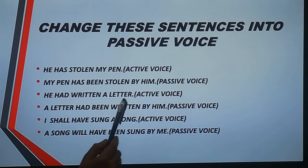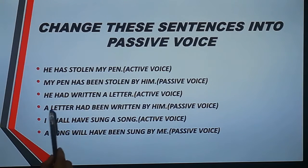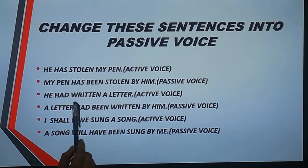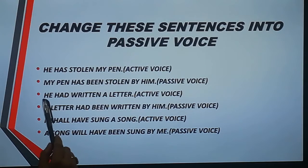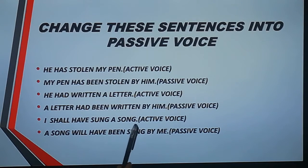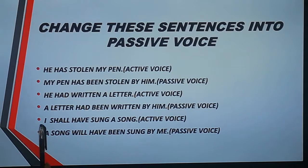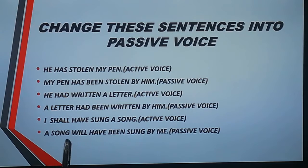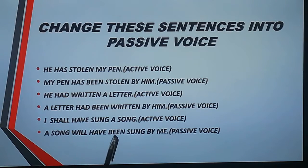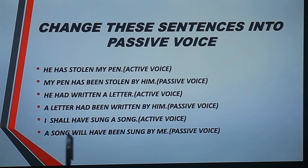'He had written a letter' — 'a letter' is the object, so the passive voice is: 'A letter had been written by him.' For 'I shall have sung a song' — with 'I' or 'we' we use 'shall have', and with words other than 'I' or 'we' we use 'will have', plus 'been' plus the third form. So the passive is: 'A song will have been sung by me'.